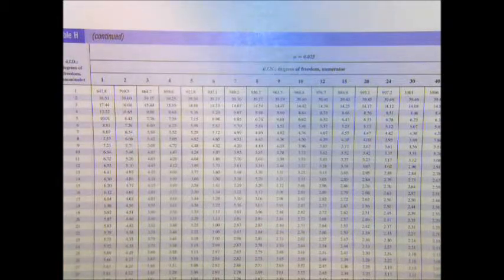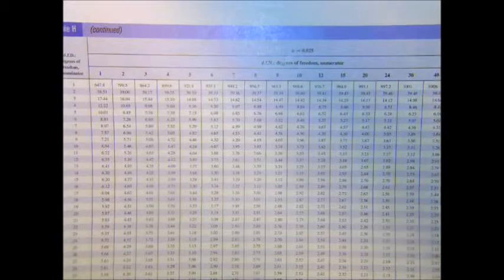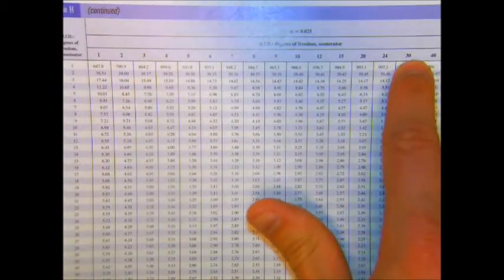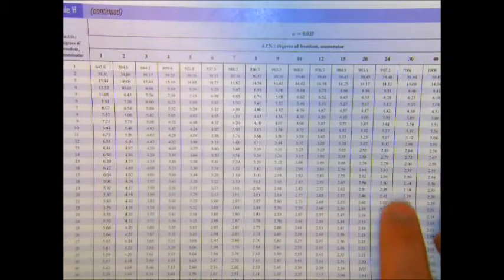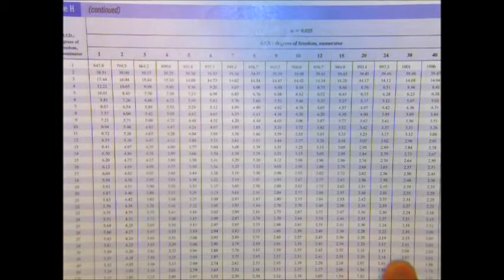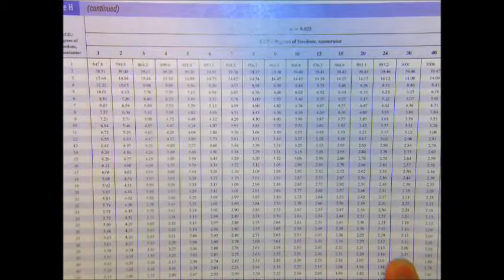In our particular test, both the numerator and denominator had 30 degrees of freedom. Here we see 30 degrees of freedom in the numerator, we come down to 30 degrees of freedom in the denominator, and that number is 2.07. That's where I got my critical value.